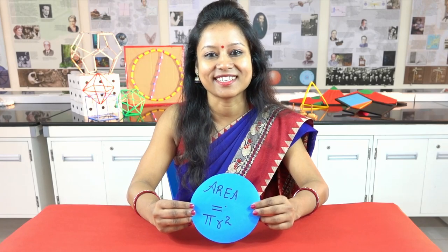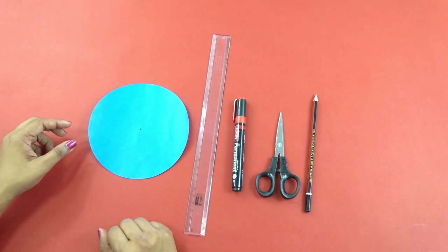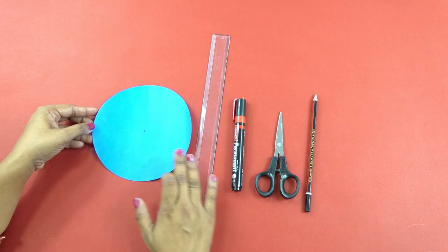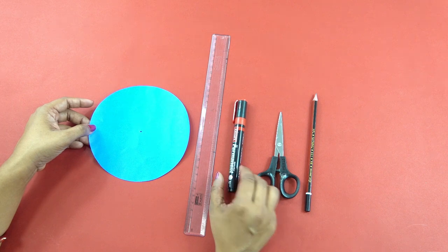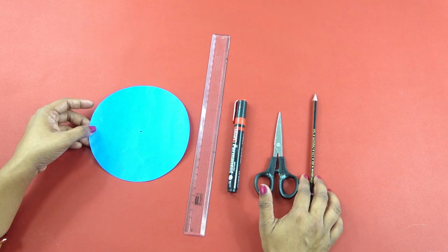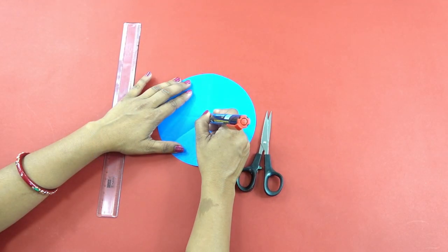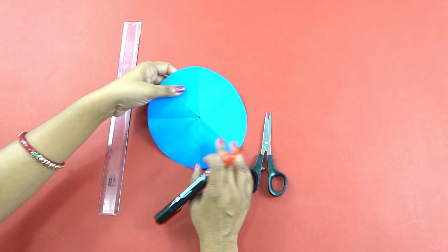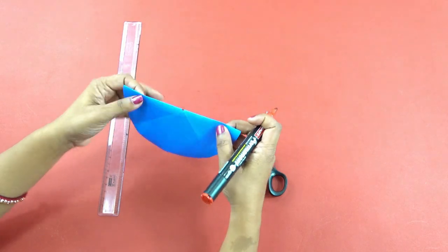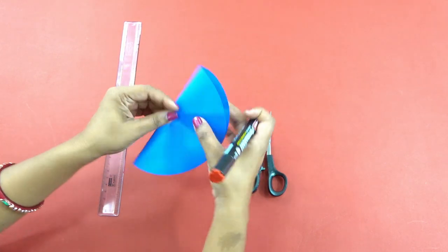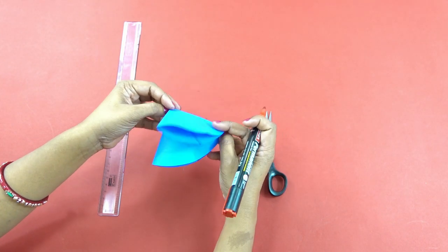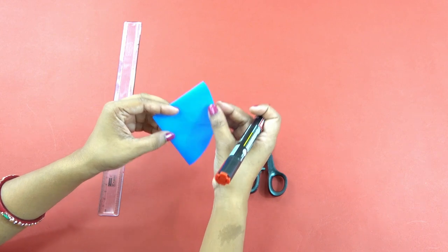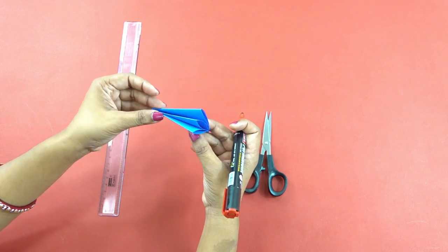For this we will need a cutout of the circle, scale, marker, scissor, and a pencil. Let's make the center with a marker and fold the circle into a semicircle this way. Make one more fold to get a bigger area of sector of the circle.